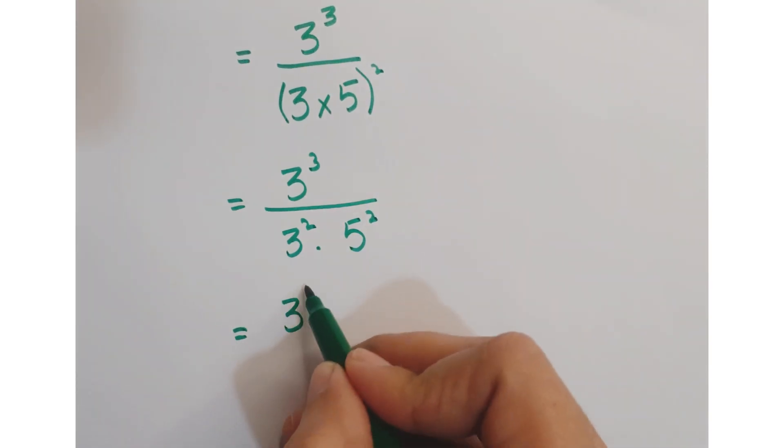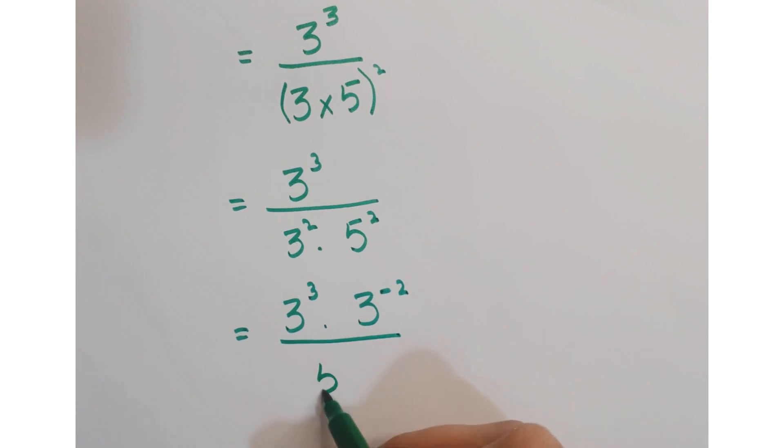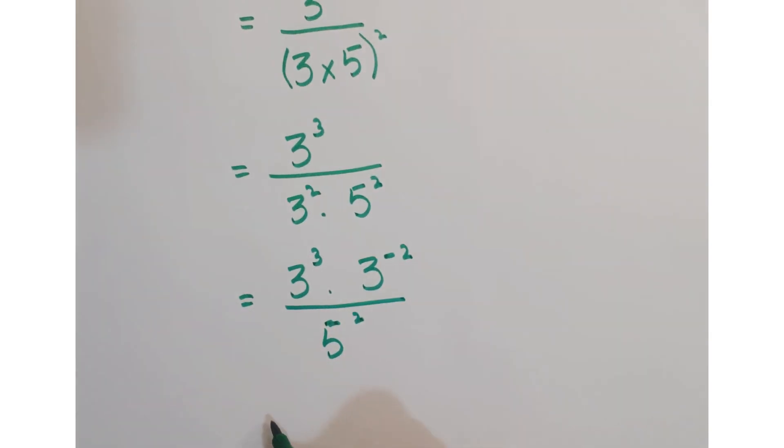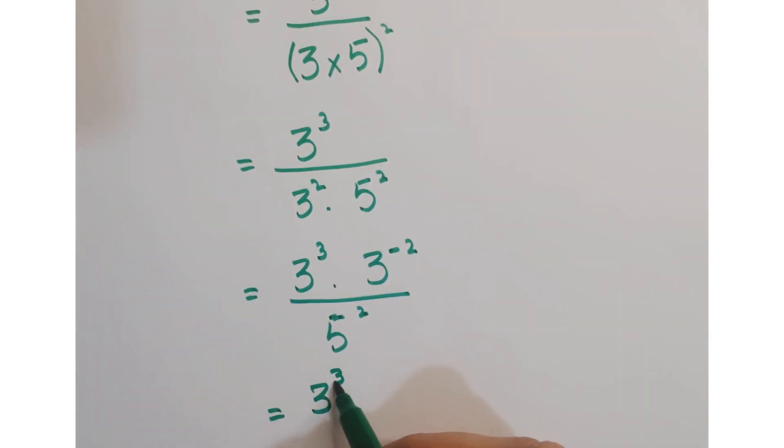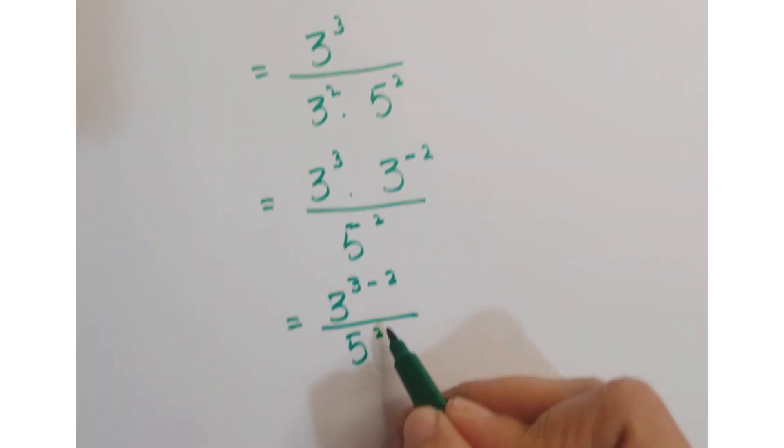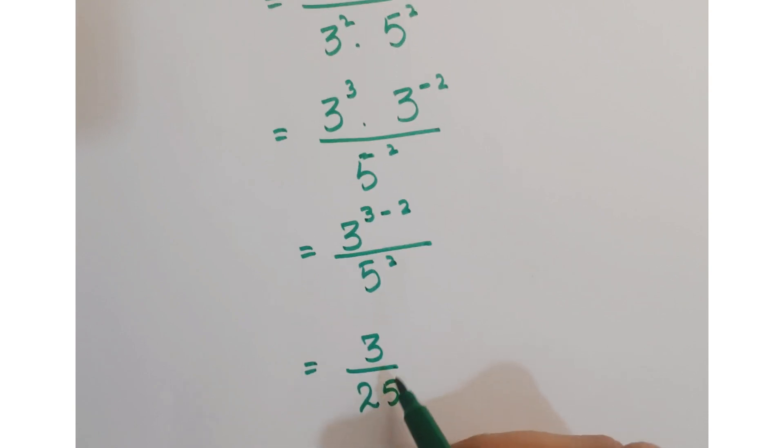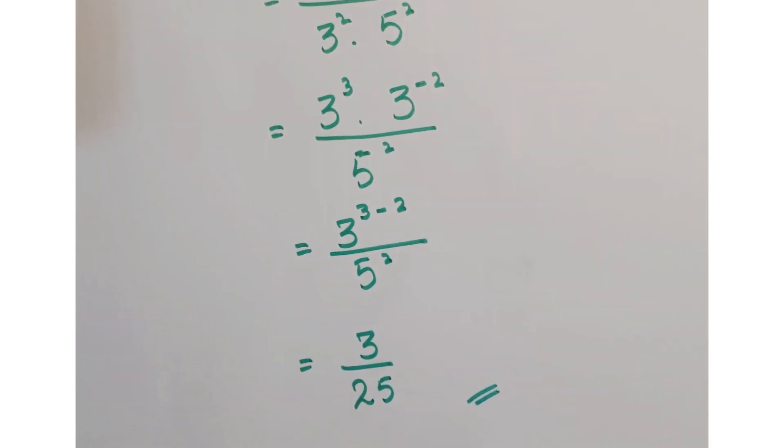Now, just move this 3 square in the numerator. So the power sign of the exponent gets changed. So here we get 3 cube minus 2 upon 5 square, or you can write it as 3 upon 25 and this is the required answer.